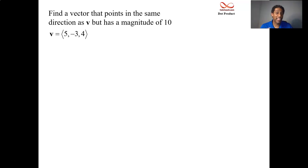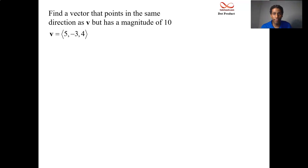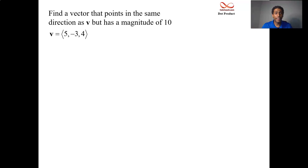In this video, we look at an application of the dot product when you want to take a vector and project it onto another vector. We're going to start off with an idea where we have a vector, call it V, and we'd like to have a vector that points in the same direction as V but has a different magnitude. We'll look at this mechanically and algebraically, then look at the geometry, and then get to the concept of projecting a vector onto another vector.